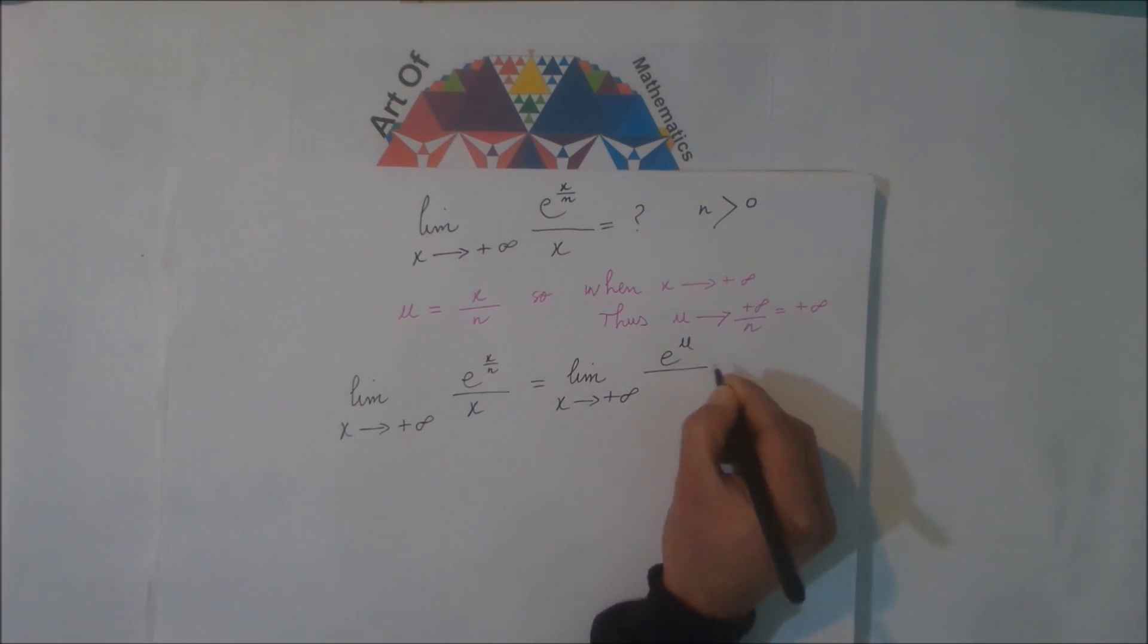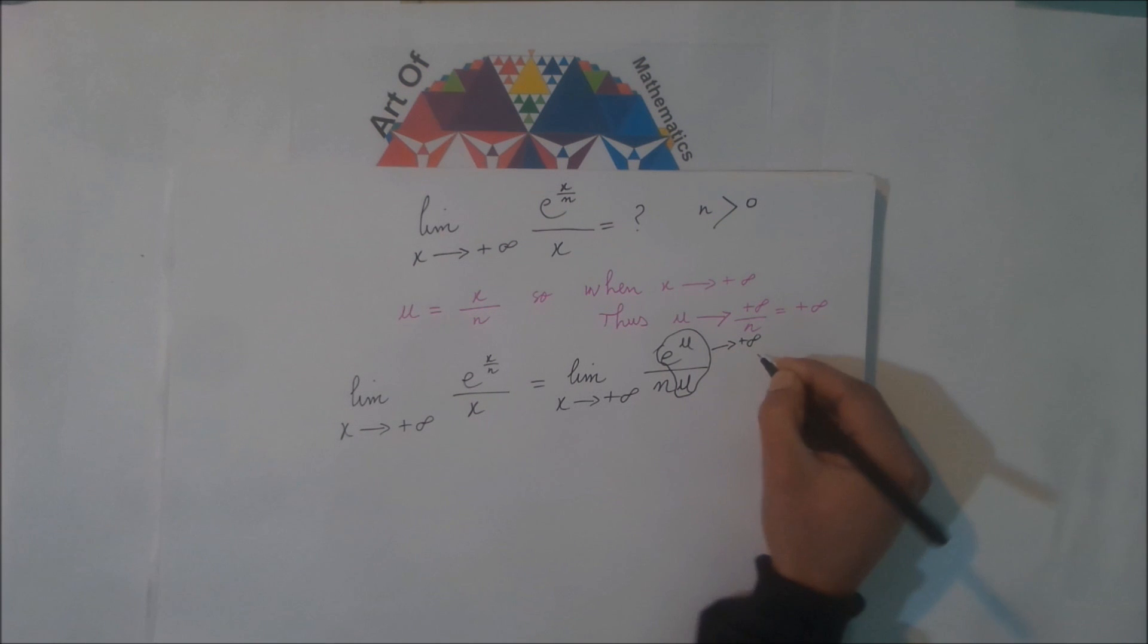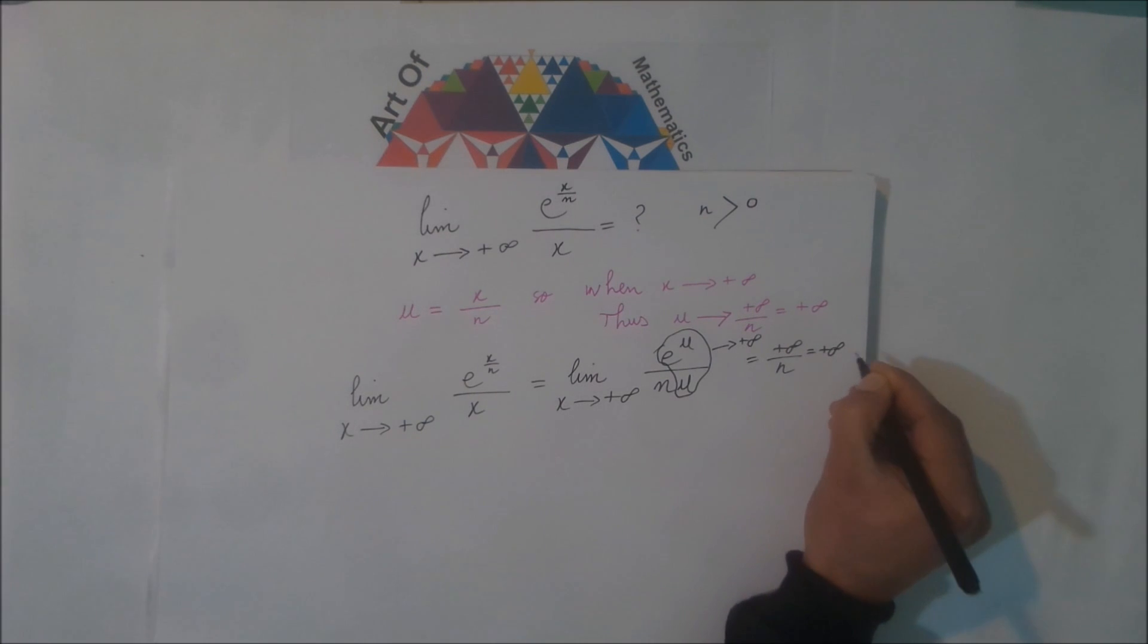The function of u divided by n is positive integral. So this tends to plus infinity, so the whole limit is equal to plus infinity divided by n, which is plus infinity.